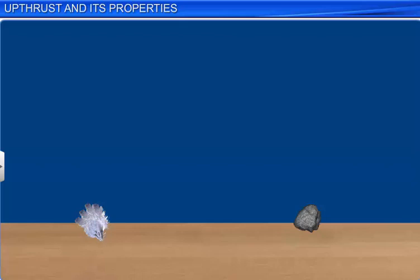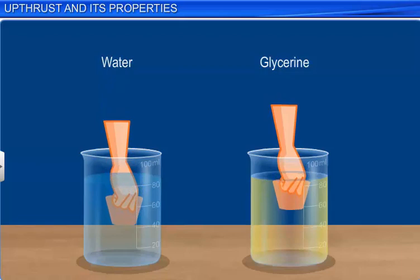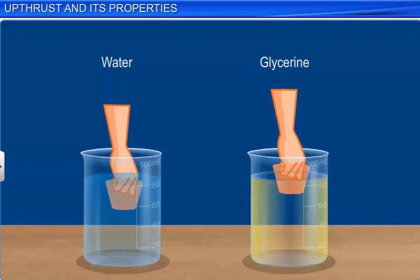If you push identical pieces of cork into two different liquids, say water and glycerin, you will notice that your fingers experience more upthrust in glycerin, as it has more density than water.